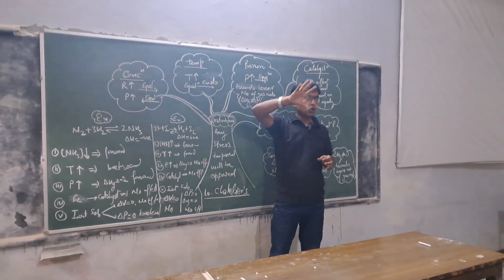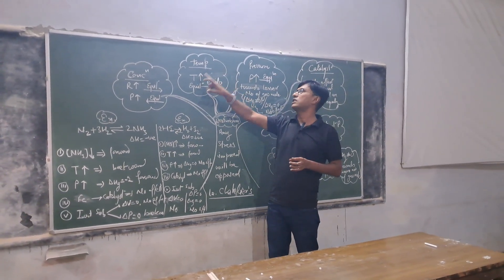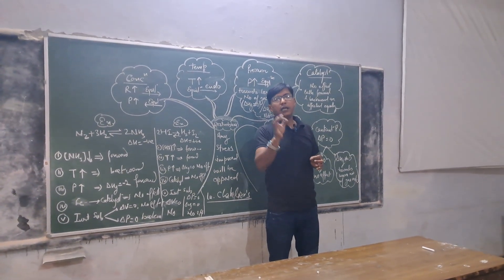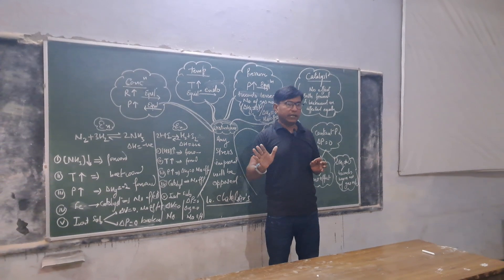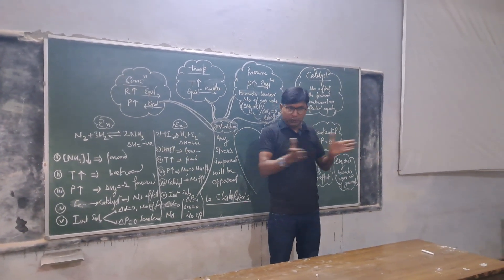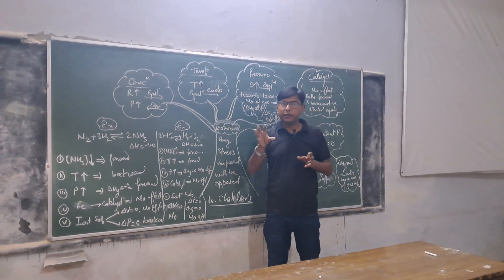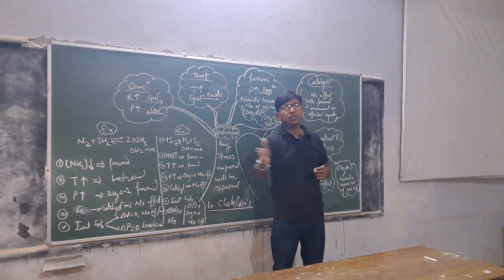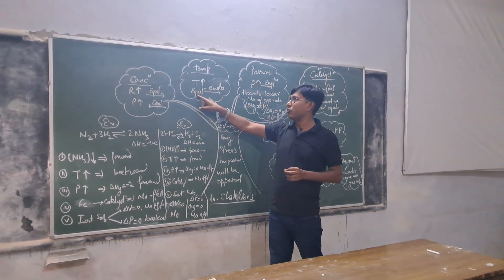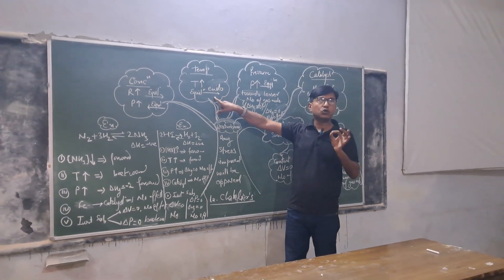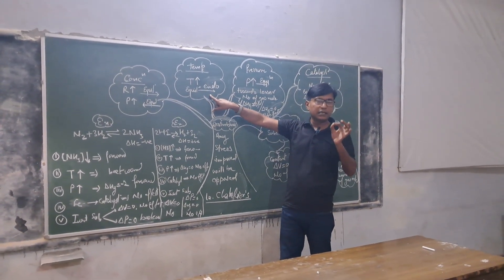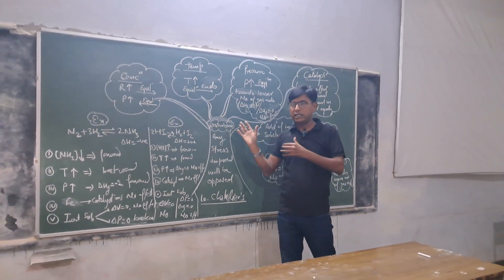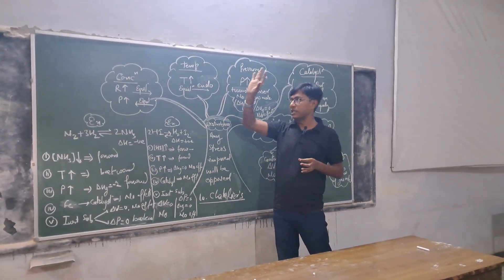The second parameter is temperature. If we increase the temperature, the equilibrium will shift towards the endothermic direction — that might be in the forward direction or in the backward direction — but the basic principle is that on increasing temperature, equilibrium will move towards the endothermic direction. So if temperature increases, we have to shift the equilibrium towards the endothermic direction when writing our answer.